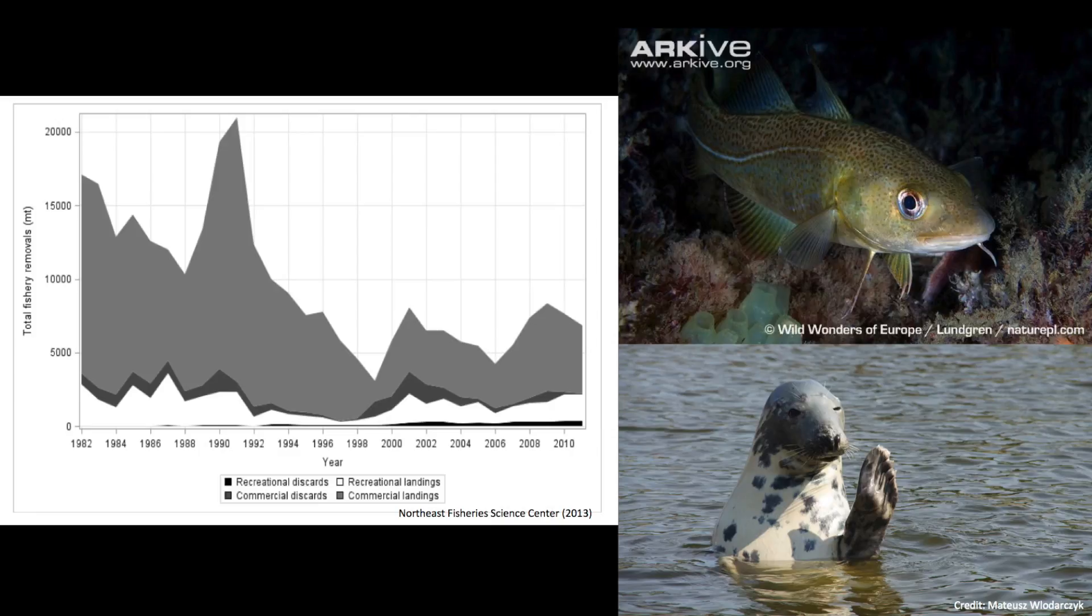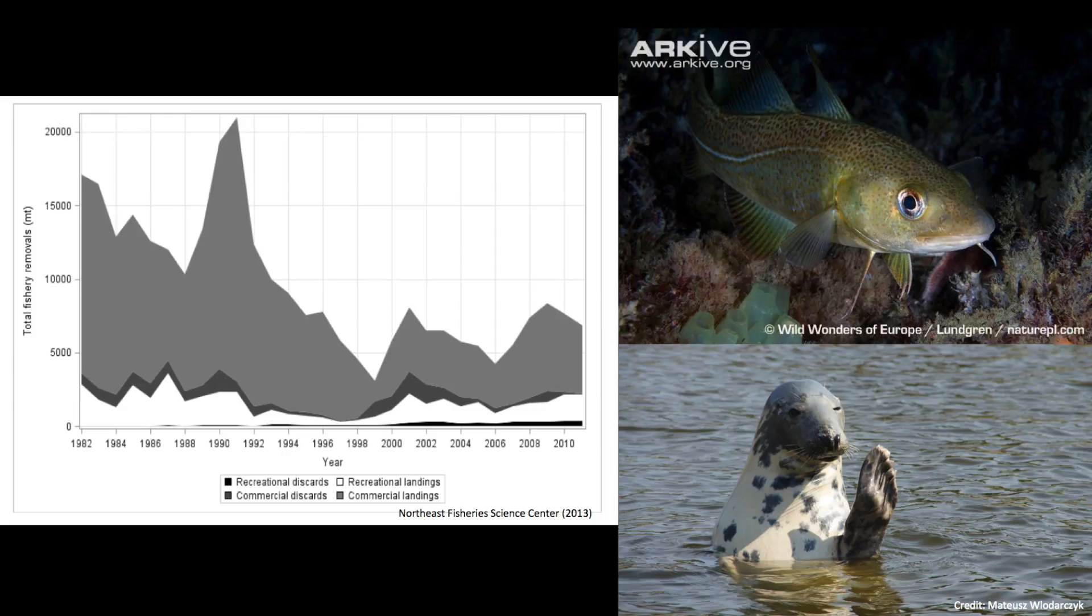The graph here shows the decline in the cod stocks off of the Gulf of Maine. They underwent a catastrophic decline and have yet to recover. There's been a lot of research money and time trying to figure out why the cod declined, but there's not a consensus answer just yet.